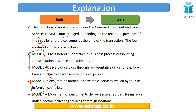Mode 1 includes cross-border supply such as BPOs, transportation, or distance education. Mode 2 includes delivery of services through representative offices — for example, foreign banks like Deutsche Bank, which has its representative office in India and delivers services to local Indian people. Mode 3 means consumption abroad — for example, medical tourism, where tourists avail medical services in India.